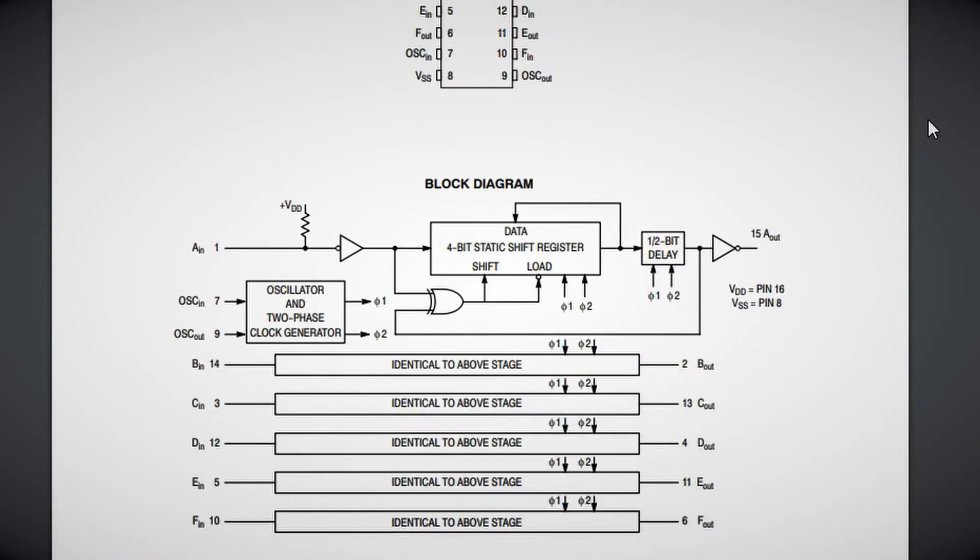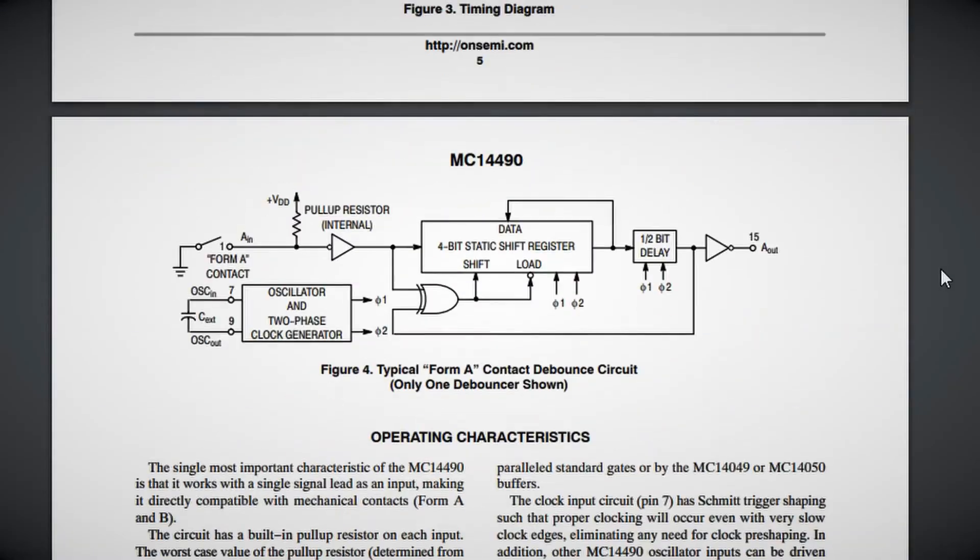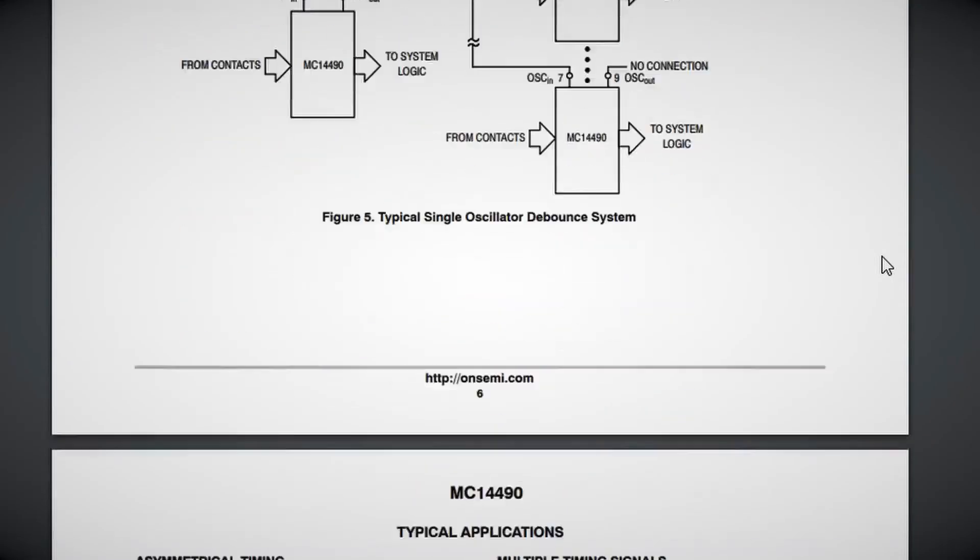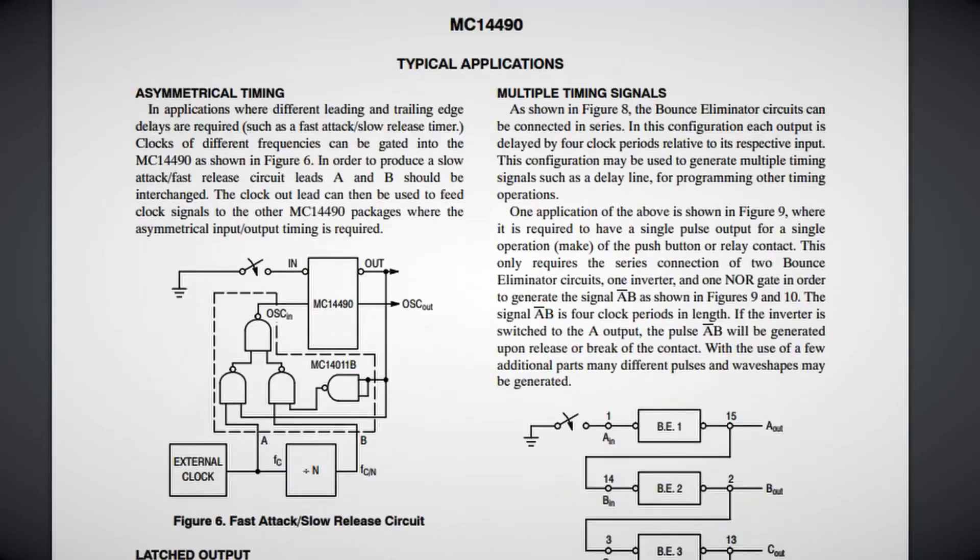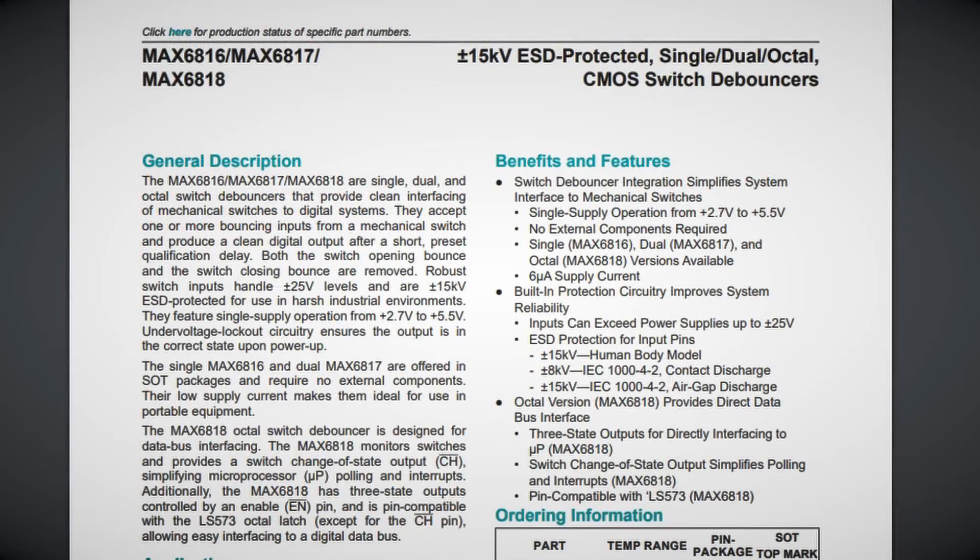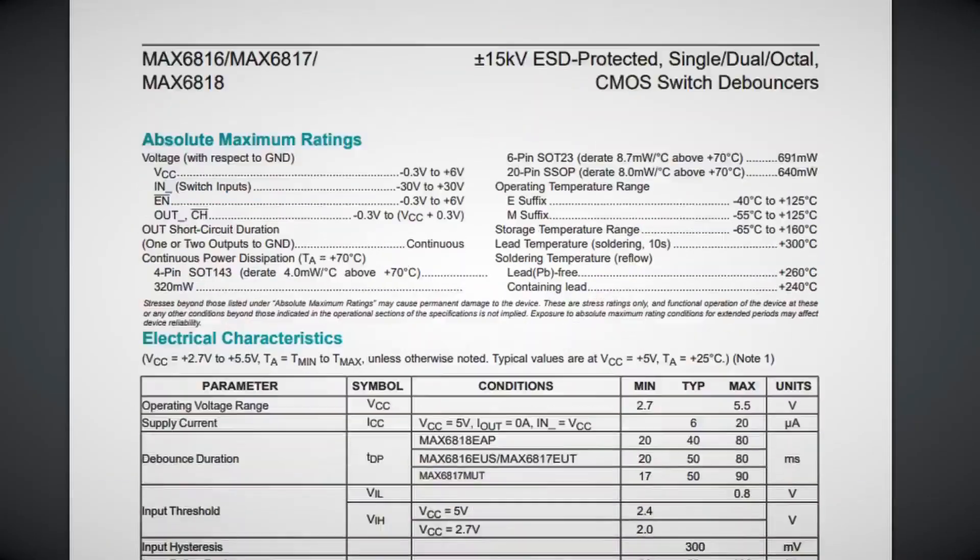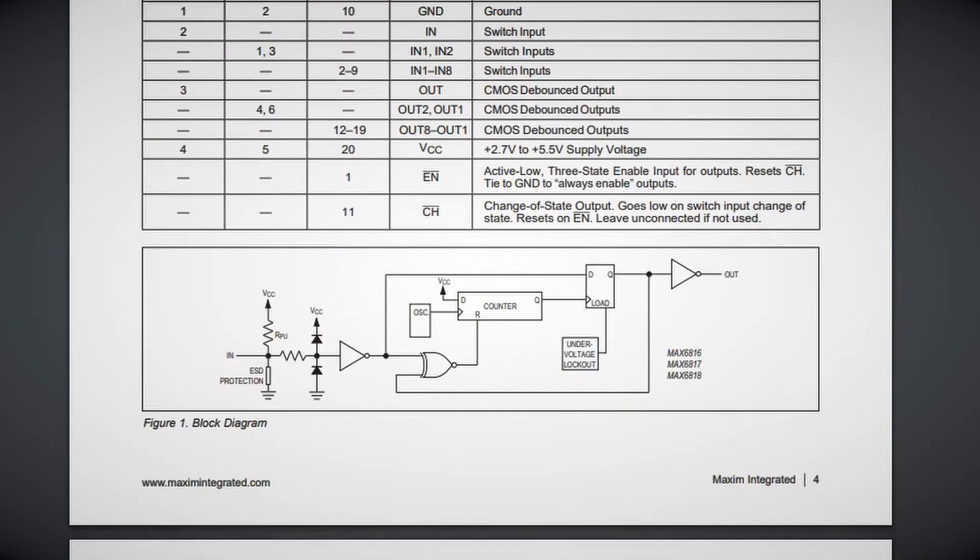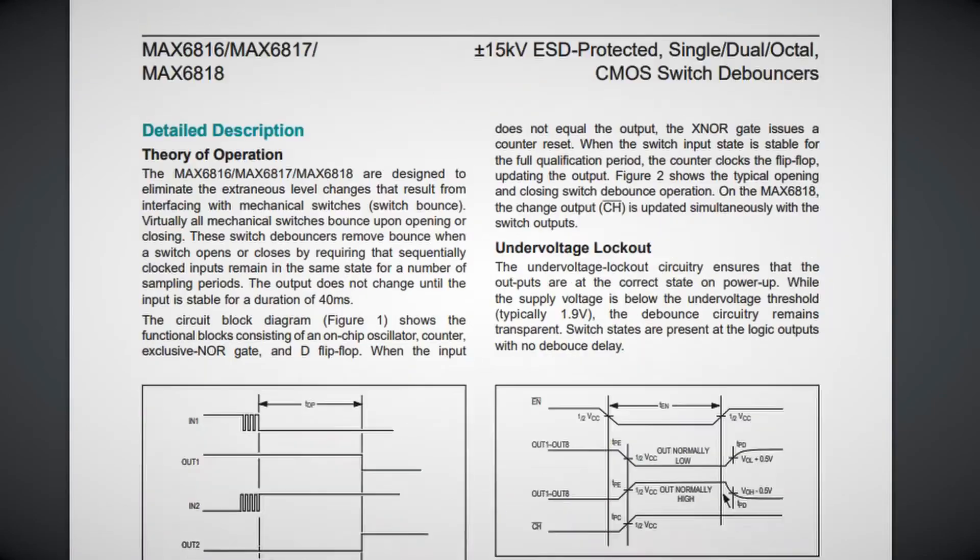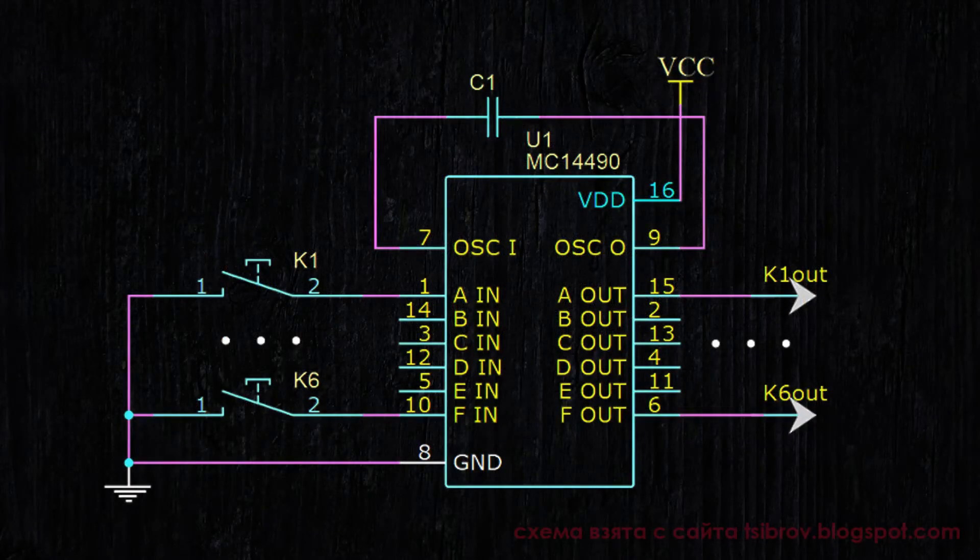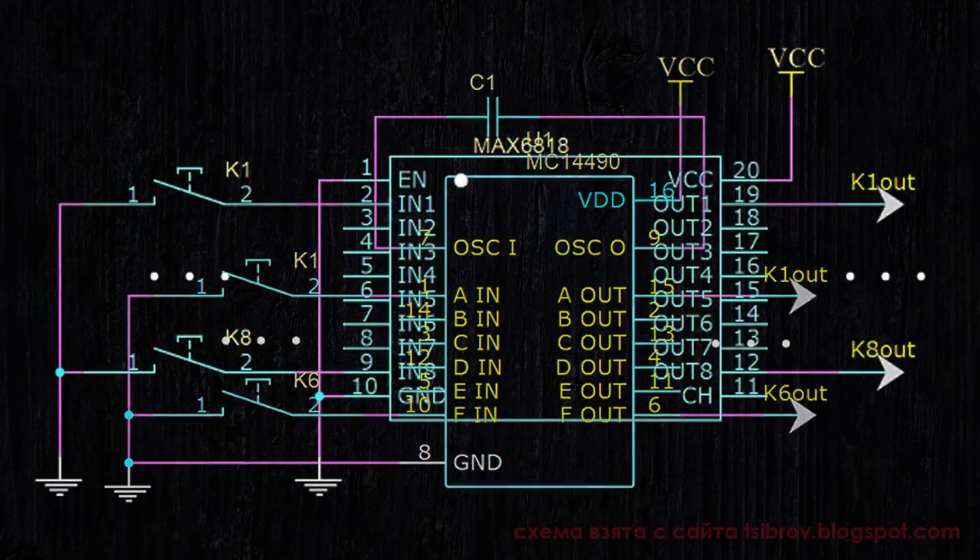However, besides Schmitt triggers, the electronics industry also produces specialized chips for debouncing. For example, MC14490 or MAC6816, 17, and 18. Buttons are connected to them, and the signal lines are taken from the outputs without any bounce. A digital delay is implemented inside. And if, for instance, the MC14490 chip requires an additional capacitor, the MAC6816 chips do not require any additional components.